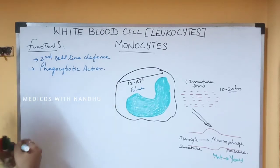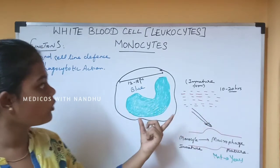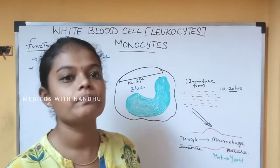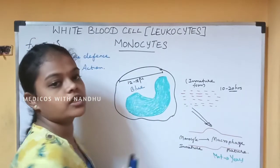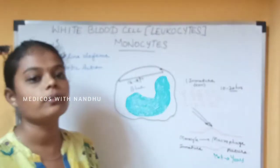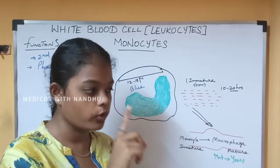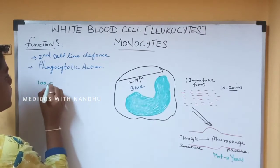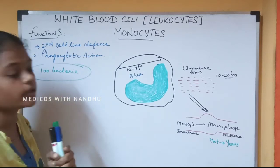To summarize: in the blood, the monocyte is in its immature form. After migrating to the tissues and becoming a macrophage, it gains full phagocytic power. One macrophage in the tissues can digest up to 100 bacteria — this is much more powerful than in its immature blood form.